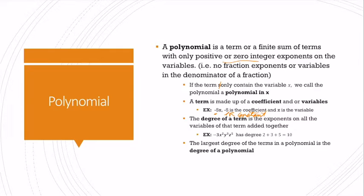The degree of a term is the exponents on all the variables in that term added together. So for example, if I have negative 3x squared y cubed z to the fifth, this is going to have degree 2 plus 3 plus 5, which would give us 10. So this is a degree 10 term.